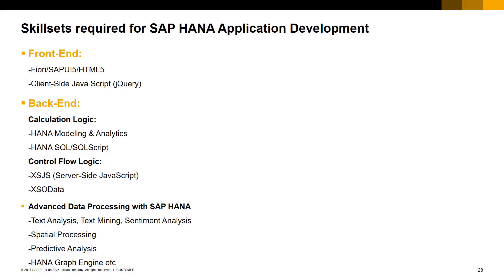This slide goes over the skill sets required for development for SAP Business One for SAP HANA, where we do not use the SAP Business One SDK, but rather a pure SAP HANA approach. On the front end: Fiori, SAP UI5, HTML5, and client-side JavaScript. On the back end: calculation logic using HANA modeling and analytics, HANA SQL using SQL Script, control flow logic using XSJS which is server-side JavaScript, and XSOData. And then on the advanced data processing side with SAP HANA: text analysis, text mining, sentiment analysis, spatial processing, predictive analysis, and the graphing engine, as well as much more.